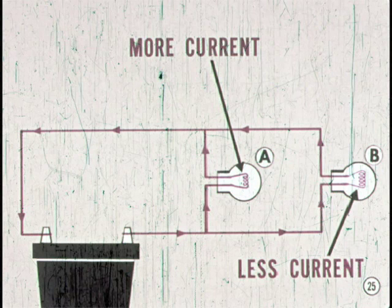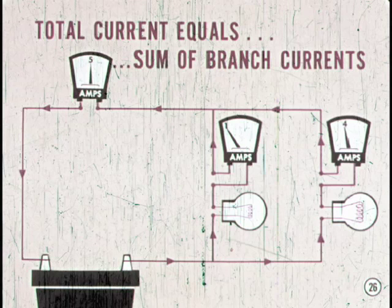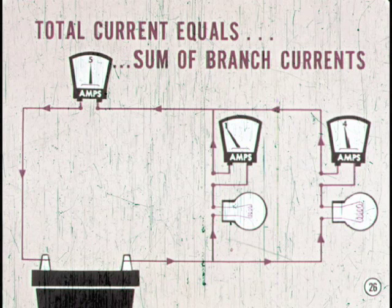More current flows through the low resistance of lamp A, and less current flows through the high resistance of lamp B. But how about current flow in the rest of the circuit? The total current flow in the circuit is always equal to the sum of the current flow in the parallel branches. This is pretty basic, but it illustrates one reason why, in circuit diagnosis, it's important to understand the difference between parallel and series circuits.